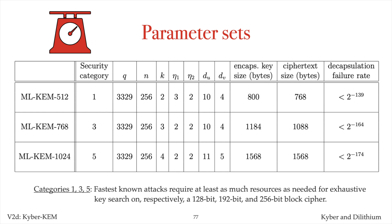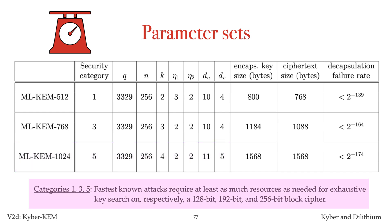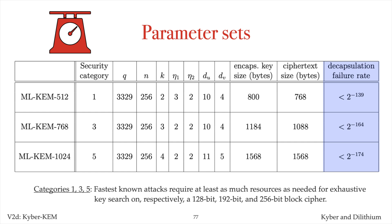FIPS 203 specifies three parameter sets for Kyber: ML-KEM 512, ML-KEM 768, and ML-KEM 1024. These are intended to provide at least as much security as 128-bit AES, 192-bit AES, and 256-bit AES, respectively. The encapsulation key sizes, ciphertext sizes, and upper bounds on decapsulation failure probability from FIPS 203 are listed, and as can be seen, the failure rates are negligible.